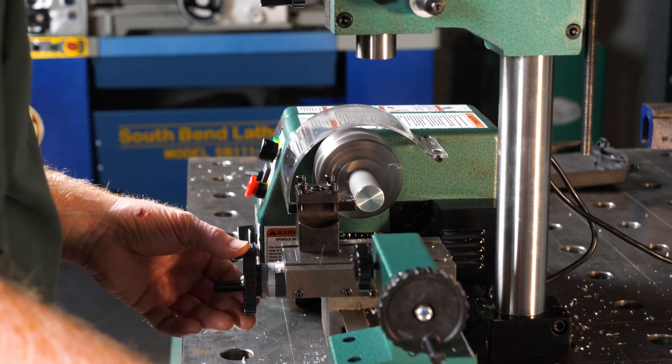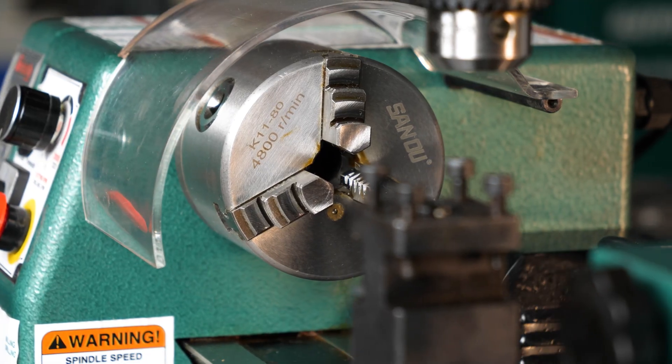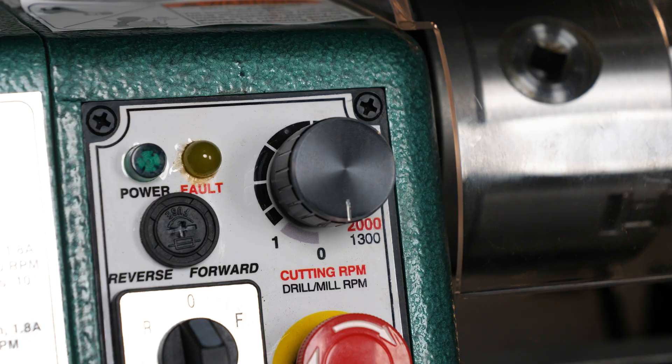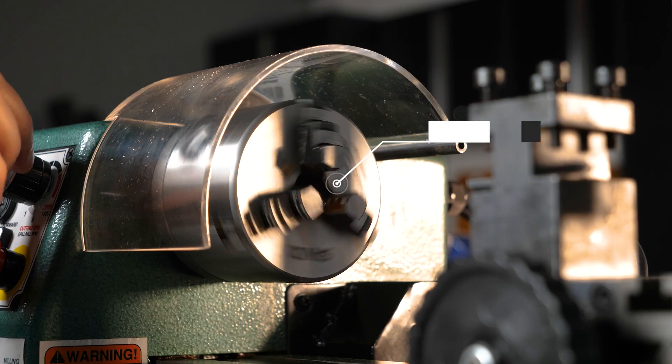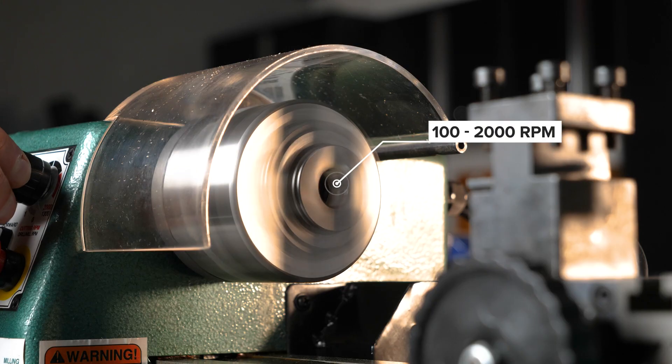The lathe cuts inch and metric threads and comes with a 3 inch 3 jaw scroll chuck. Use the dial to set the spindle speeds between 100 and 2000 RPM.